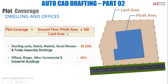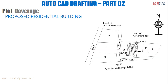The equation gives the percentage of the plinth area relative to the land area. If this building is a dwelling unit — like hotels, hostels, guest houses, or public assembly buildings — the maximum plot coverage is 66.67%. For offices, shops, or other commercial and industrial buildings, the plinth area can be up to 80% of the land area, but not more than that.